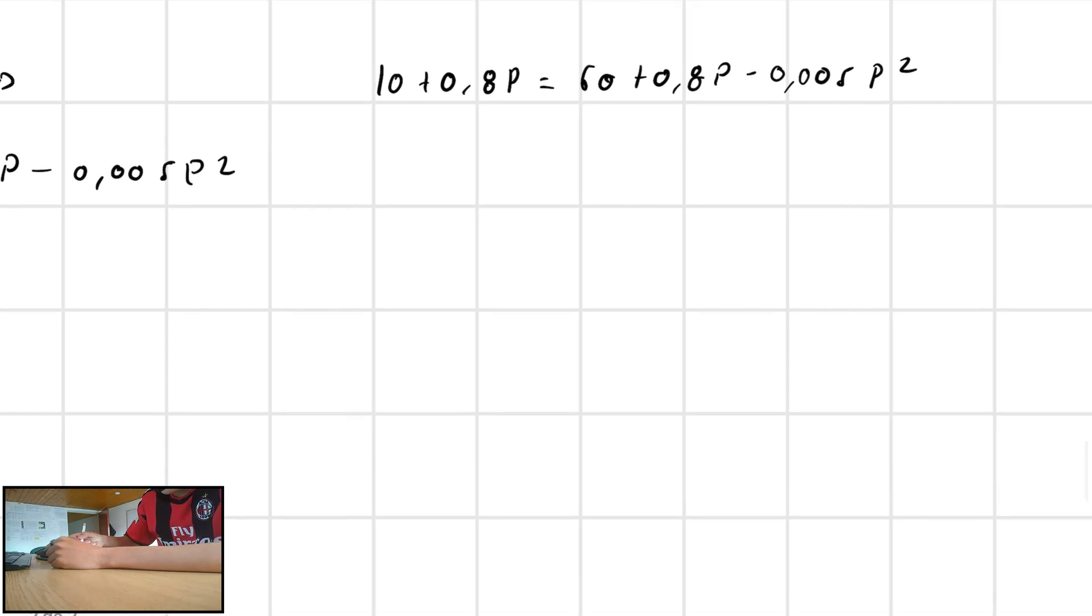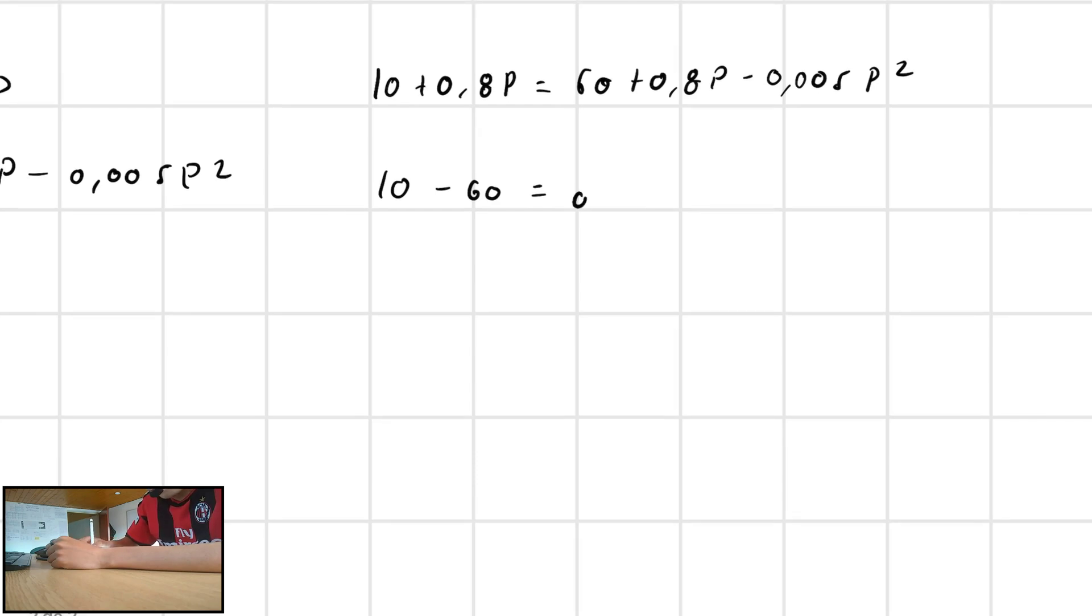Which means that I am going to take both of the parts in just one part of the equal, which means that we have 10 plus 0.8P minus 0.8P minus 60 minus 0.005P squared. This simplifies to minus 50 equals minus 0.005P squared.